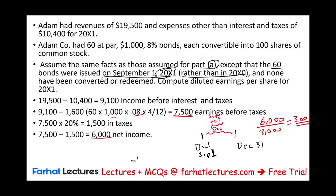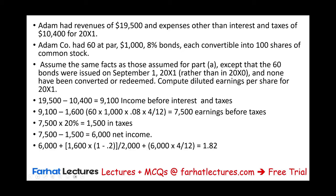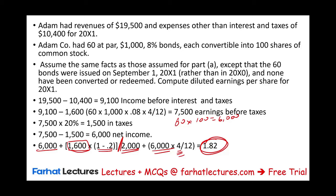For diluted EPS, we take net income of $6,000 plus $1,600 of interest times 0.8 (net of tax), divided by 2,000 shares plus 6,000 shares prorated for 4/12 (since bonds were issued in September). This gives diluted earnings per share of $1.82. It went from $3.00 to $1.82, so it is diluted.